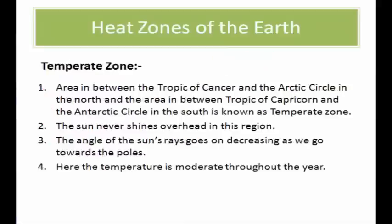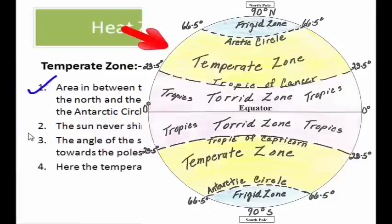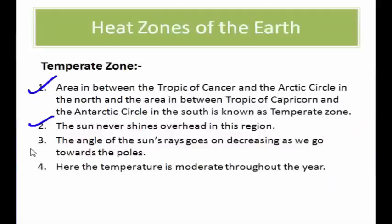The temperate zone lies between the Tropic of Cancer and the Arctic Circle in the north, and between the Tropic of Capricorn and the Antarctic Circle in the south. The sun never shines overhead here — the rays fall in a slanting manner and the angle decreases as we move towards the poles. Because of this, temperatures are moderate throughout the year. Countries like the United States, Canada, all of Europe, Northern Africa, the Middle East, Japan, and New Zealand are within the temperate zone, making these places ideal for tourism.